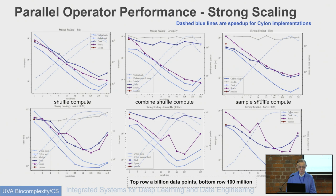Here are some strong scaling results for join, group-by, and sort, again for a hundred million and a billion rows. Cylon is always the lowest graph — always the fastest. It is compared with Dask, Spark, and Modin. Modin is always the slowest. Spark is actually quite good at times but not as fast as Cylon. Spark does have huge industry support and is getting improved every day.